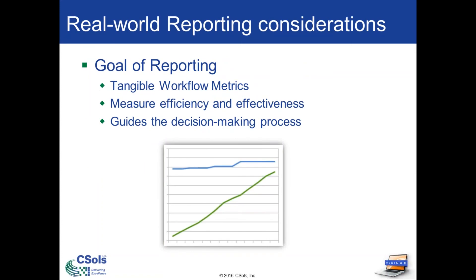Altruistic purposes aside — such as benefiting the causes of human health and advancing research — labs are ultimately interested in adopting the most efficient processes and the most fiduciarily responsible methods for operating and doing business. The raw primary goal of a LIMS system is to generate and reveal the metrics created during sample processing workflows. This information in turn is used to measure the efficiency and the effectiveness of these processes, allowing management to make the best relevant decisions possible.